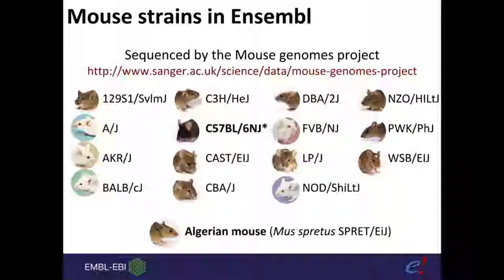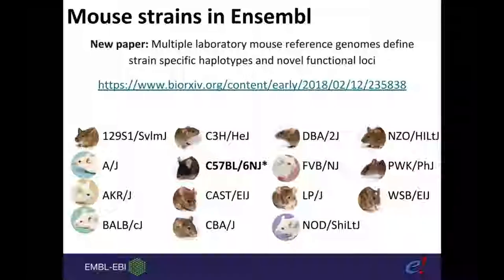These are the mouse strains we have in Ensembl, imported from the Mouse Genomes Project at the Sanger Institute. This includes all 15 different Mus musculus strains as well as the Mus spretus species, the Algerian mouse. C57BL/6NJ is highlighted as a strain but is also the same species as the mouse reference genome. There is a new paper about this resource currently on bioRxiv, which details the reference genomes, haplotypes, and novel functional loci — a link has been posted in the chat.